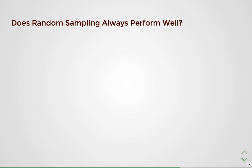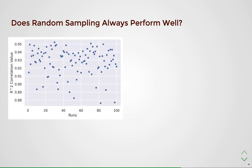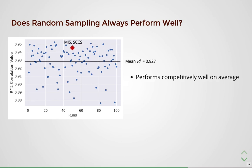To answer whether random sampling always performs well, we learned 100 different cost models with different random seeds and plotted their R-squared values on the test set. From the plot, we observe that random sampling performs competitively well on average, further substantiating the efficacy of our proposed novel hardware representation. However, there are samples where the model performs relatively worse, showing that poor random choices are possible. Hence, we recommend using the more structured approaches for representing the hardware, while noting that even simple random sampling works well most of the time.